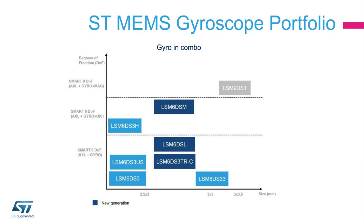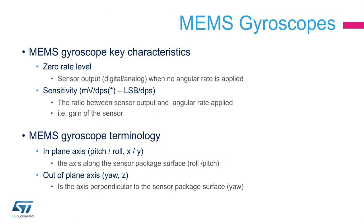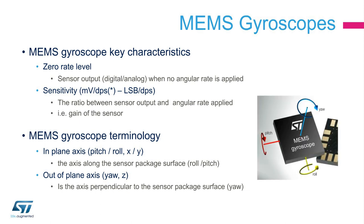ST's gyroscope in combo devices is an ultra-low power solution for always-on applications, combined with best-in-class performance. At ST, we focus on a set of key features to guarantee that we provide the best-in-class design. Let's have a quick look through these features — for example, zero-rate control, sensitivity, and so on — to see how ST performs. First, a quick explanation of the terminology that we use to describe how a gyroscope rotates in three axes.